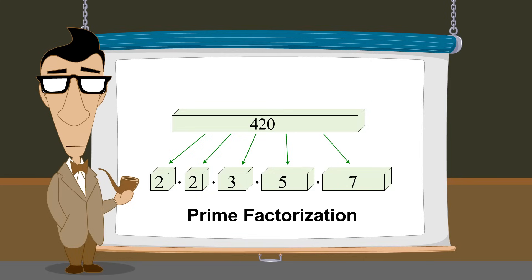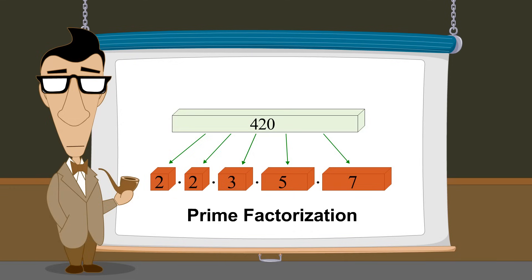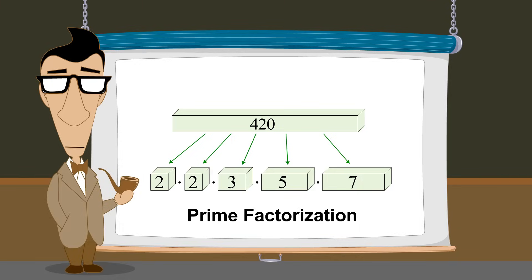Prime factorization allows us to break down each denominator into its basic building blocks of prime factors, so that we can see how to create the smallest possible common denominator.